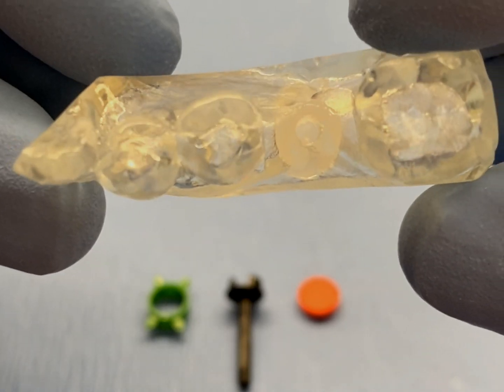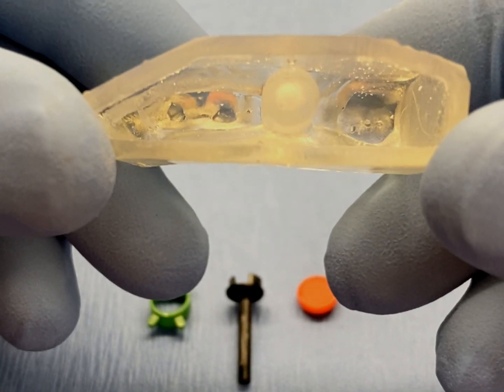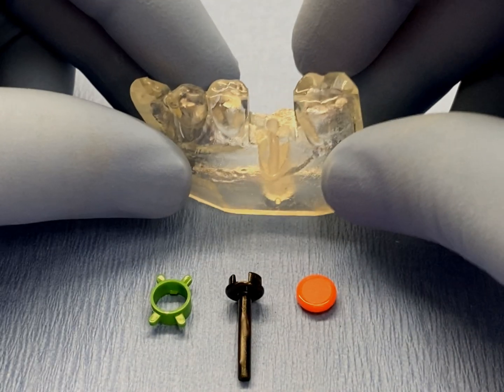To begin, make sure the printed GRS surgical model has been properly trimmed and that all implant cylinders or holes printed in the model are free from debris.